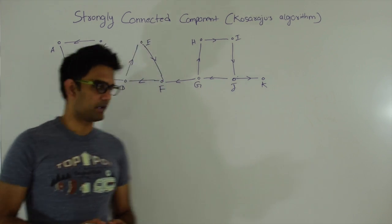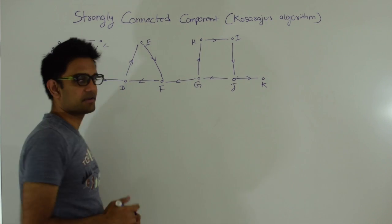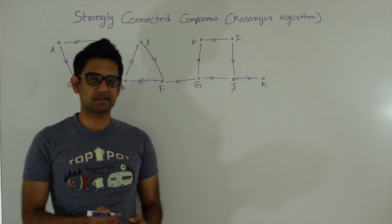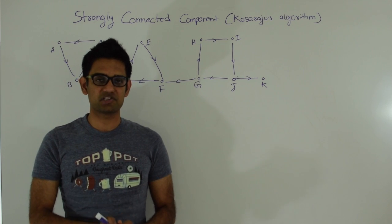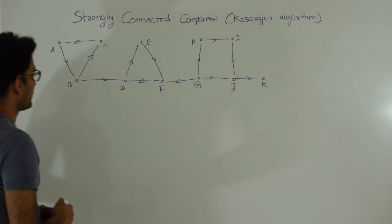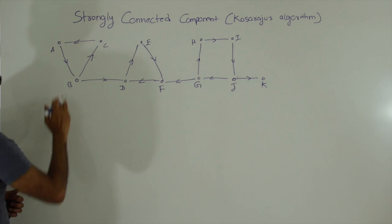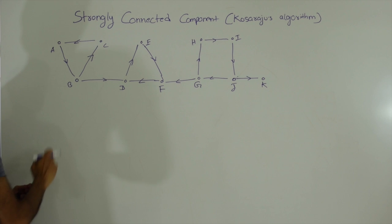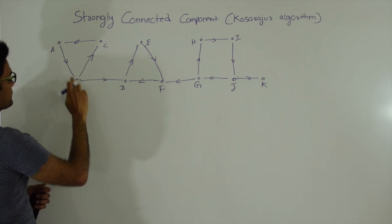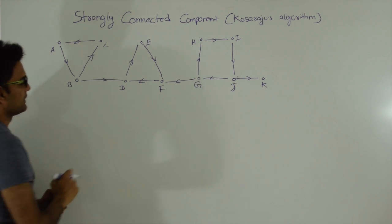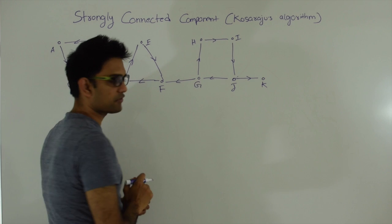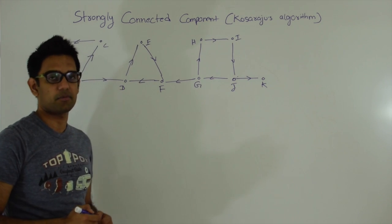So what is a strongly connected component? Here I have a directed graph and a strongly connected component is a component such that all the vertices in that component are reachable from every other vertex in that component. Here I have four different strongly connected components: A, B, C; DEF; GHIJ; and K.